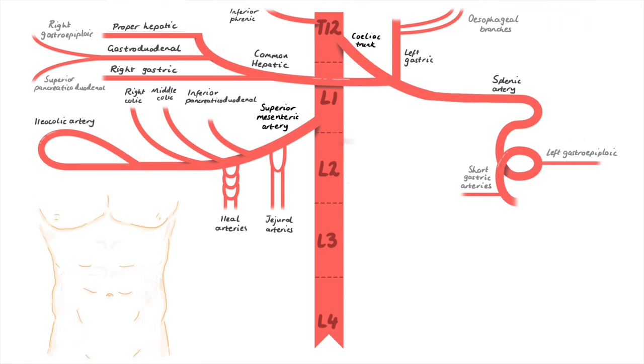Next up, L2. From L2, we have two major arteries branching straight from the aorta. First up, the renal arteries, which has the inferior suprarenal coming off it. The superior suprarenal comes off the inferior phrenic, just so you know.